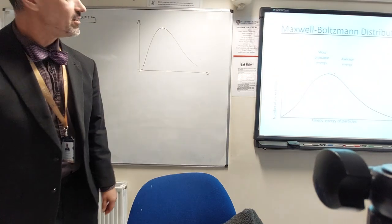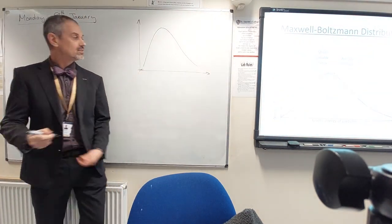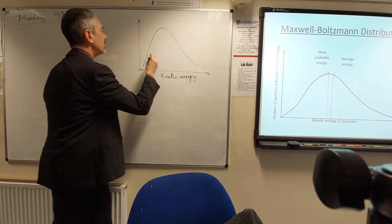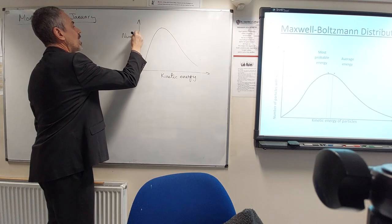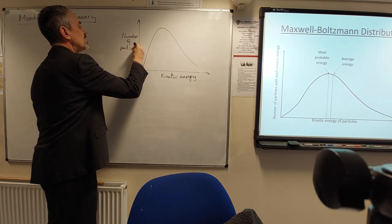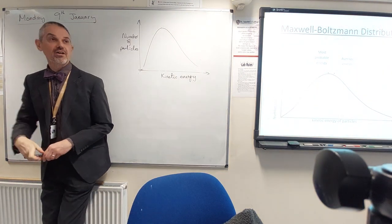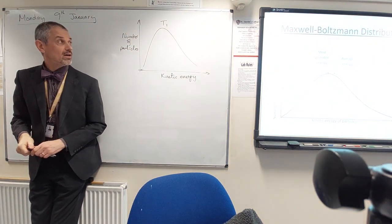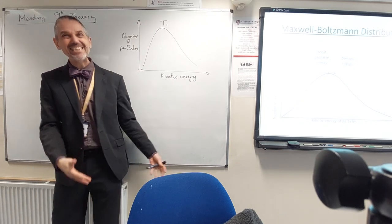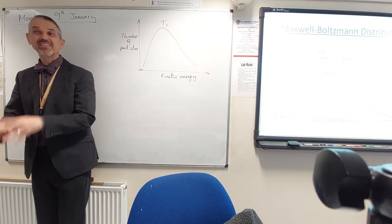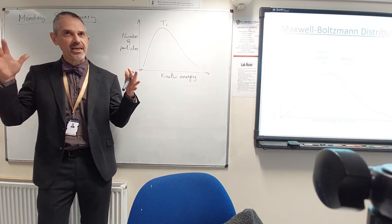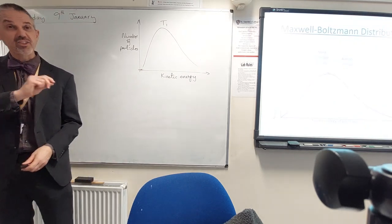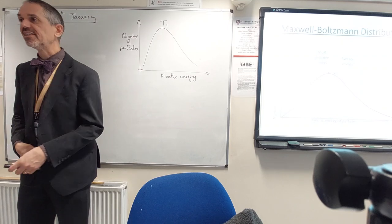Draw yourself another nice smooth curve — should probably have some labels on it. I'm going to call that temperature T1. What would the graph look like if I heated up my gas a little bit? Same amount of gas, same volume, same box, same amount — but just heated up a little bit. Could you draw it on your axes, please?